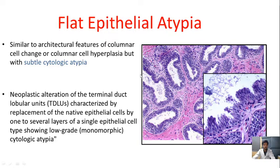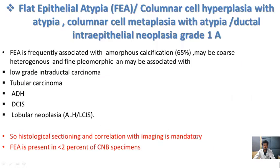The third type of lesion is flat epithelial atypia, which is similar in architectural features to columnar cell changes or columnar cell hyperplasia but with subtle cytological atypia. It is a neoplastic proliferation of the terminal duct lobular unit characterized by replacement of native epithelial cells by one to several layers of a single epithelial cell type showing low-grade monomorphic cell type. Flat epithelial atypia is frequently associated with amorphous calcification, present in 65% of cases, which may be coarse, heterogeneous, or fine pleomorphic, and may be associated with low-grade intraductal carcinoma, tubular carcinoma, ADH, ductal hyperplasia, or lobular neoplasia. It has been present in less than 2% of biopsy specimens.